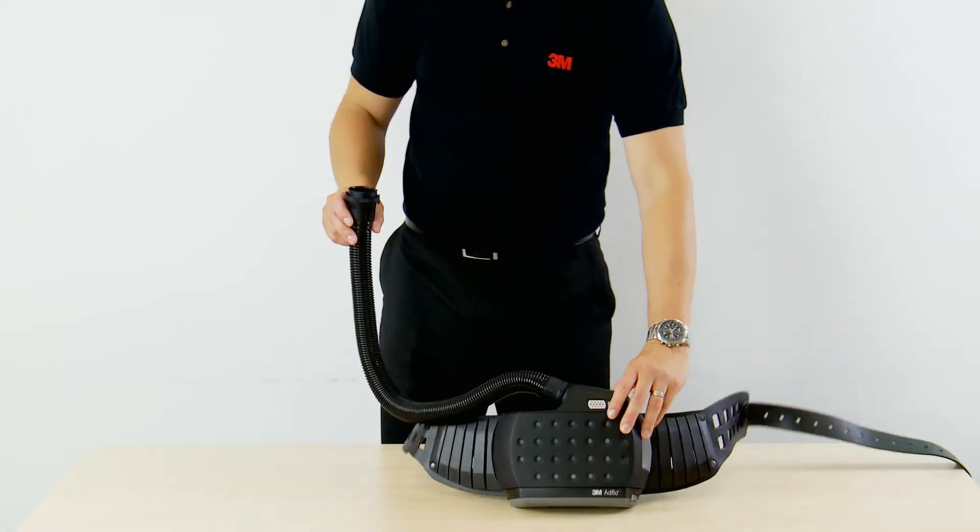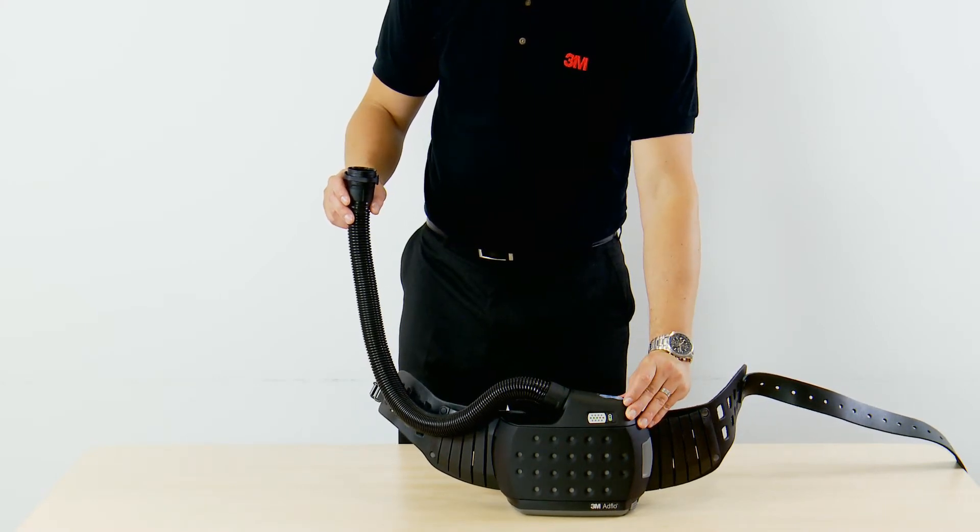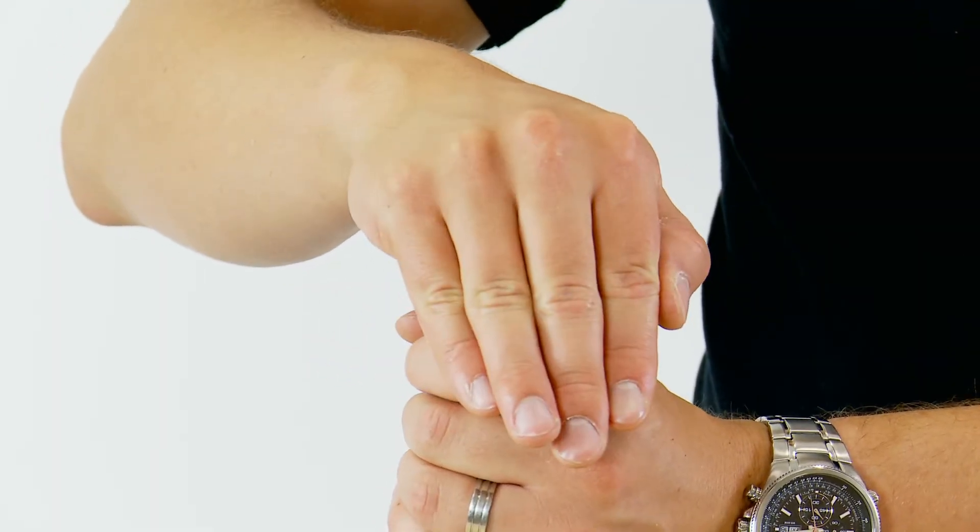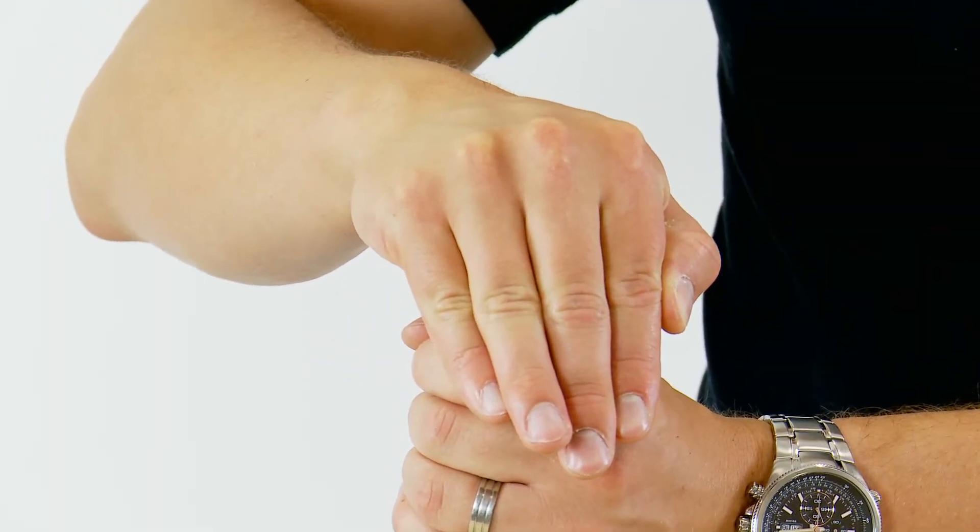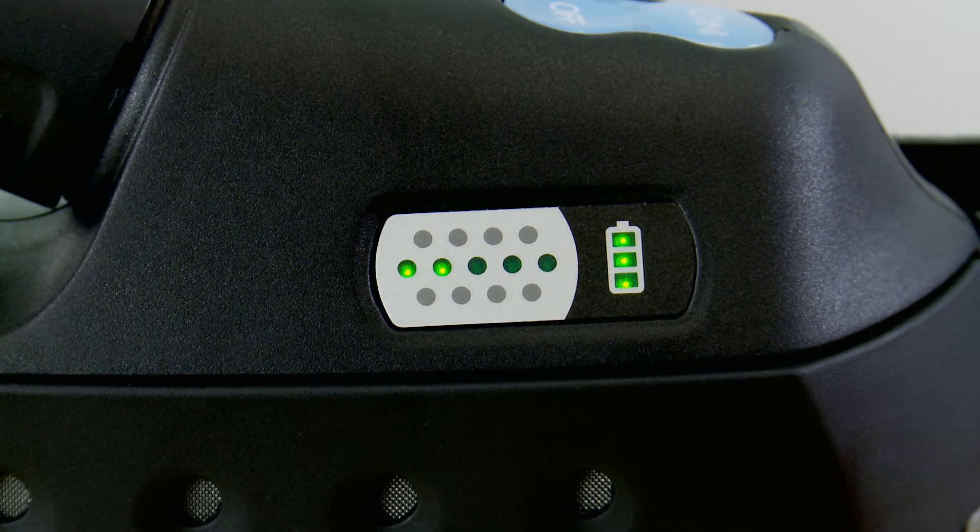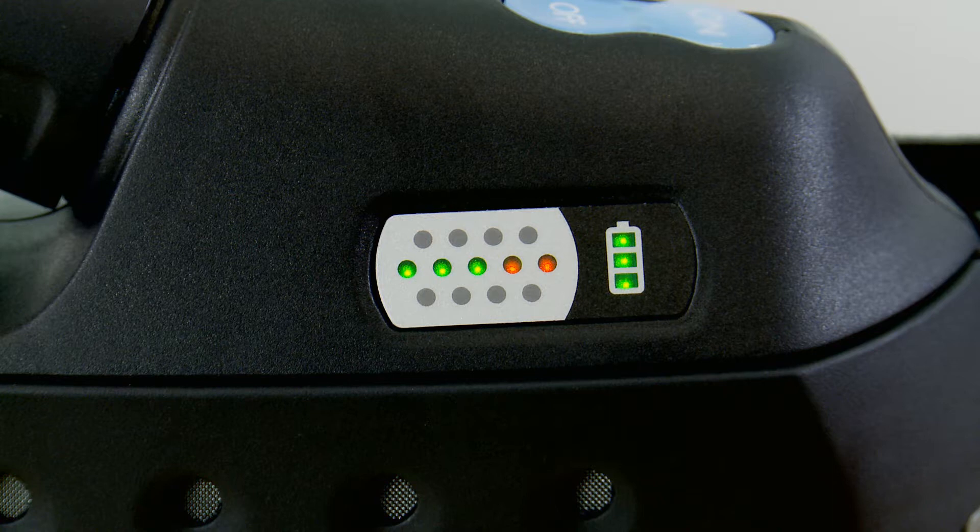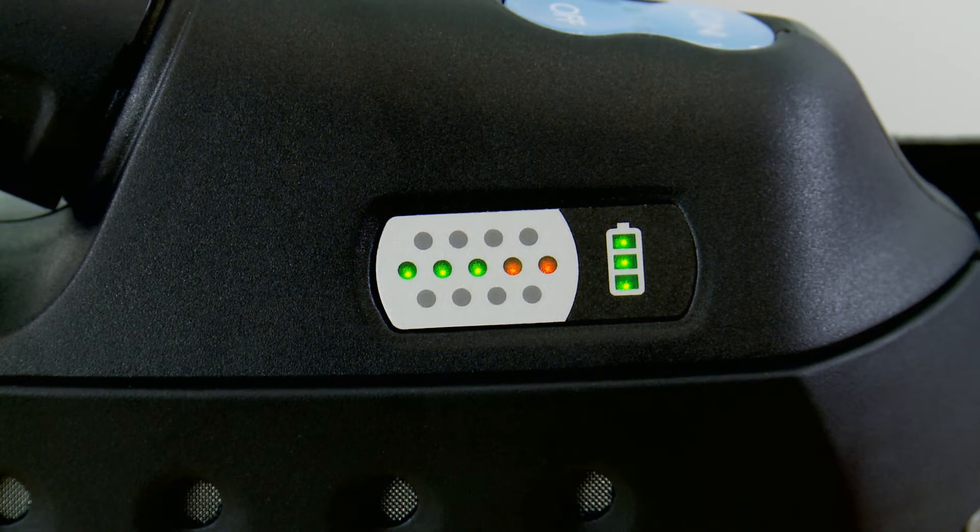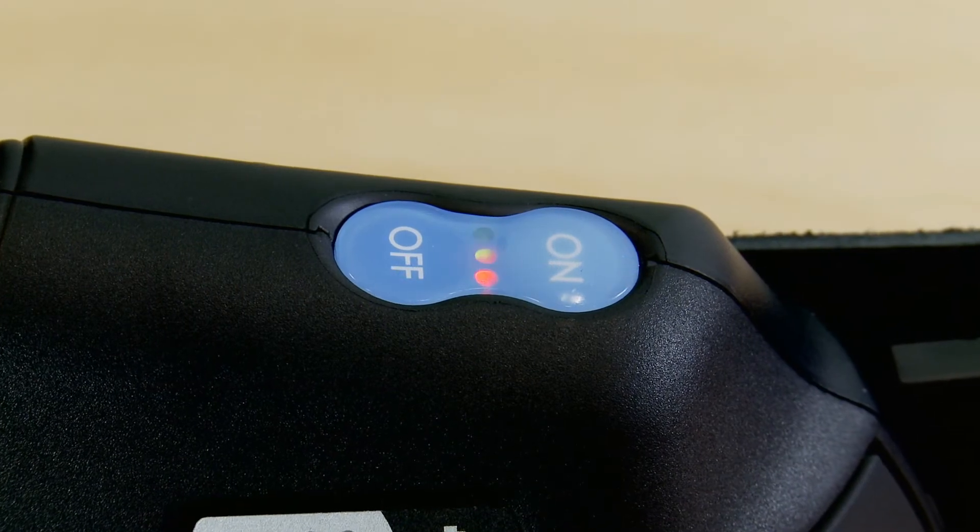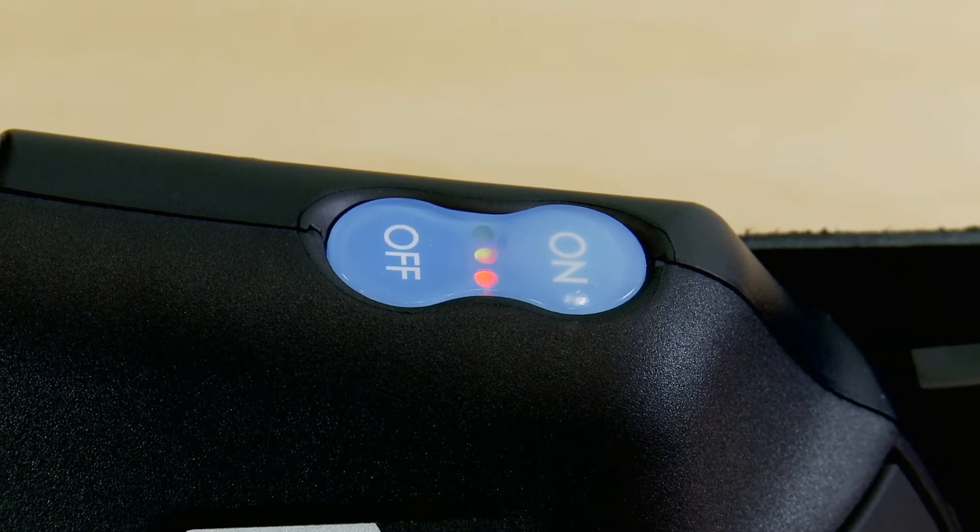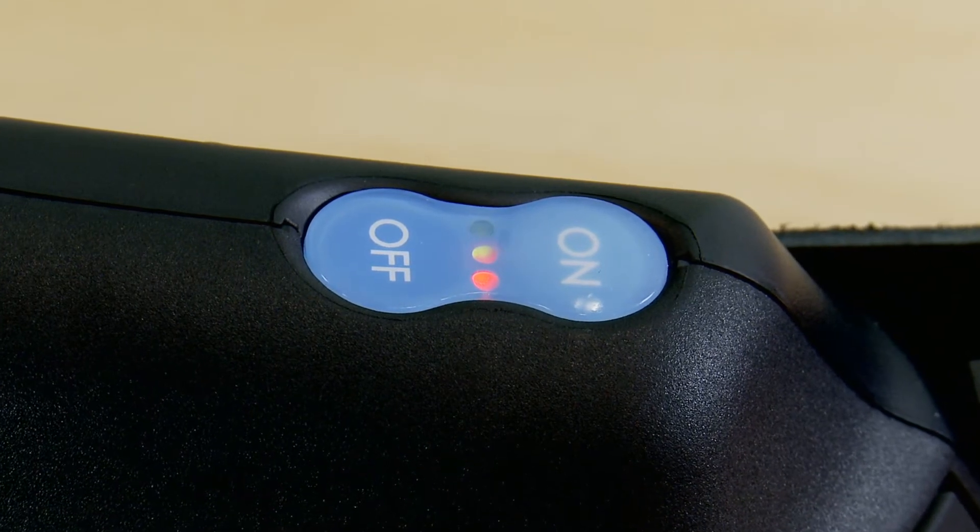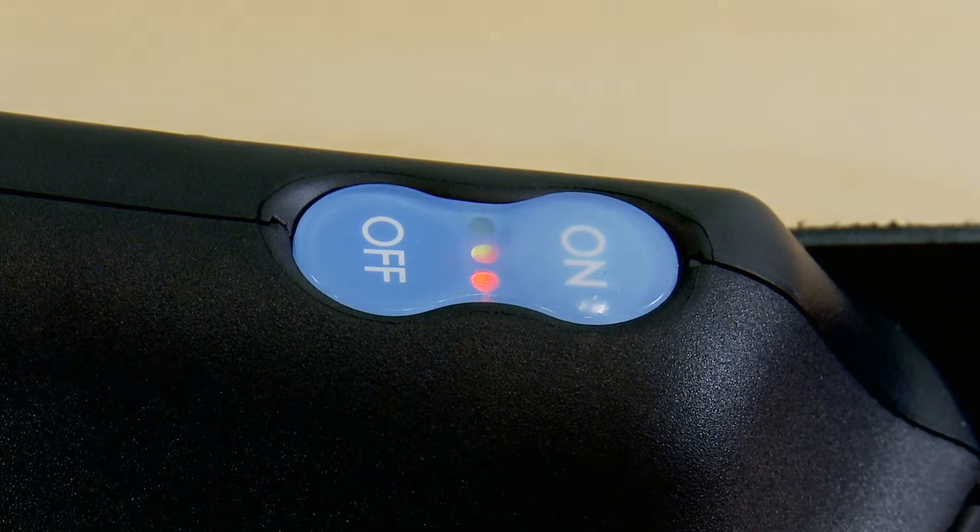The AdFlo powered air respirator is fitted with a low flow alarm which is designed to warn you should the airflow drop below the minimum design flow rate. To test this, block the breathing tube with your hand. You will hear the motor work harder to try and deliver the correct airflow. When the AdFlo can no longer deliver the flow, all the lights on the particle clogging indicator and the red light on the on-off panel will be illuminated. You will also hear a high-pitched alarm. If this situation were to occur during normal use, you should leave the hazardous area immediately.